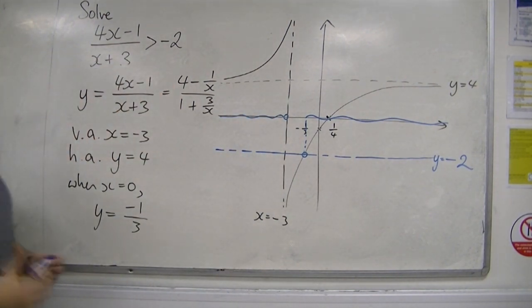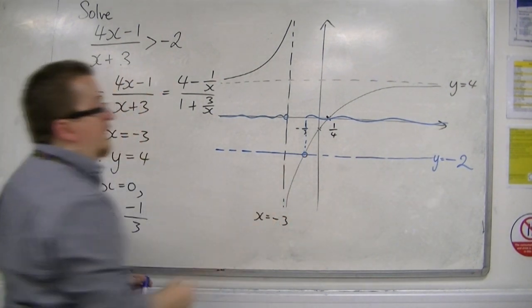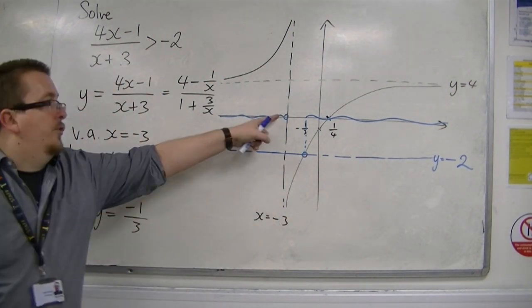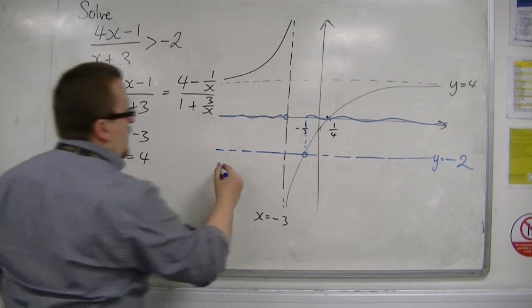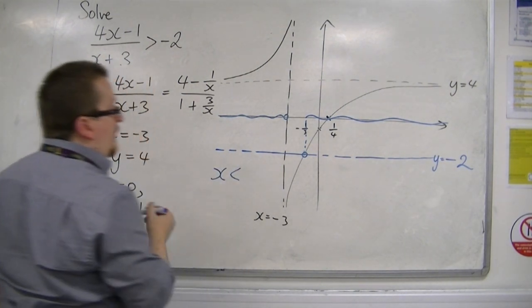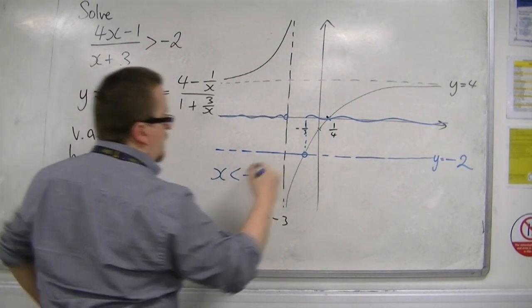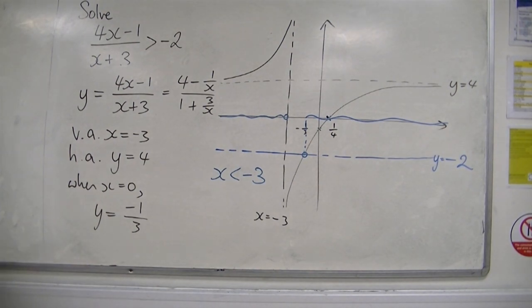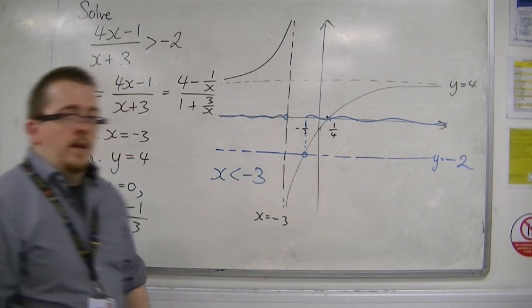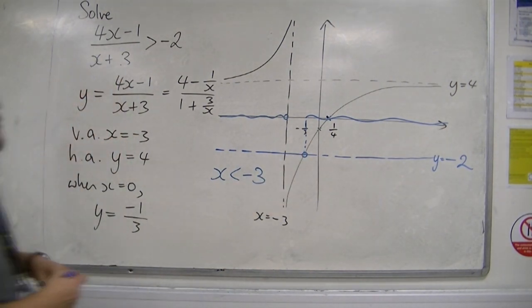Okay, so I need to determine this value here. I know that that's minus 3, so I know that one of the inequalities is x is less than minus 3. But I don't know that value yet. So I'm going to have to put this equal to minus 2.